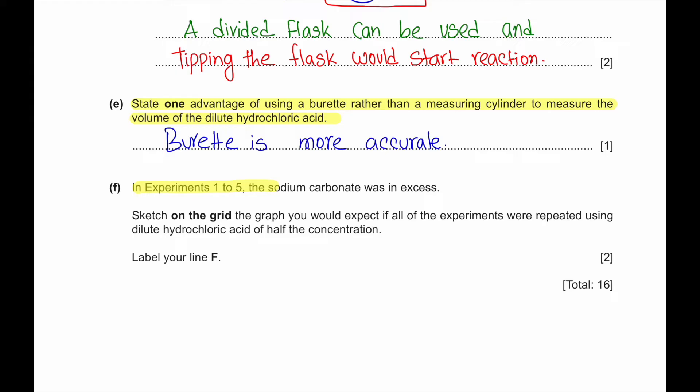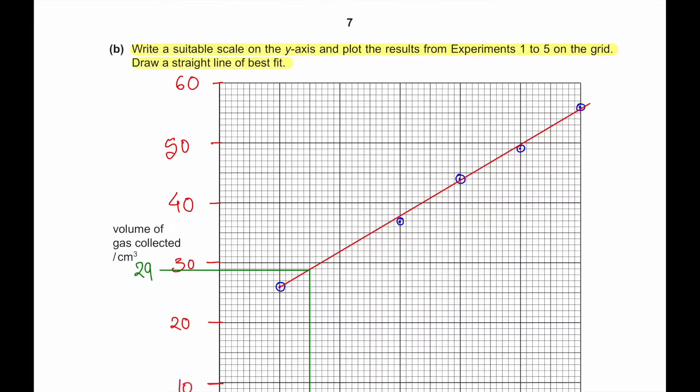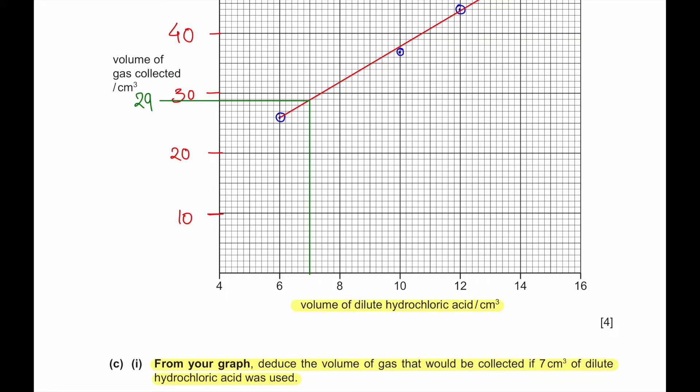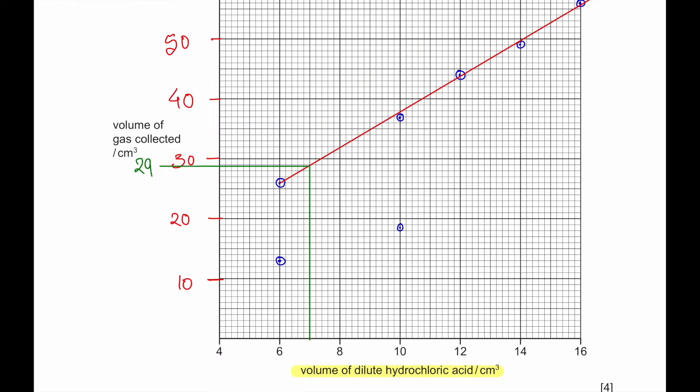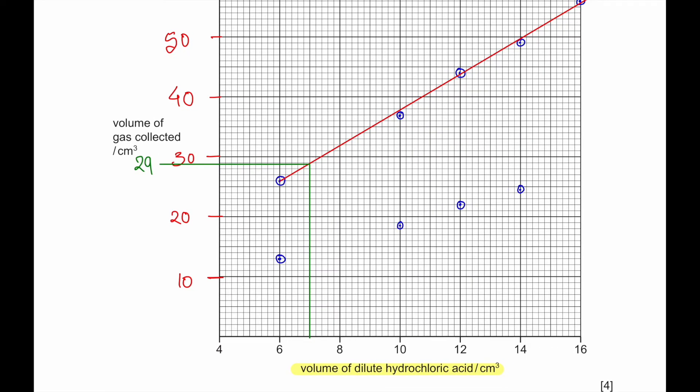Part F, in experiments one to five, the sodium carbonate was in excess. Sketch on the grid the graph you would expect if all the experiments were repeated using dilute hydrochloric acid of half the concentration. If half the concentration is used, then we would get volume half quantity. So for volume of dilute hydrochloric acid at 6, instead of getting at 26, we would get 13. For 10, instead of getting at 37, we would get half of 37, so 18.5. For 12, we would get, instead of 44, we would get 22. For 14, instead of 49, we would get 24.5. For 16, instead of 56, we would get half of it, which is 28.